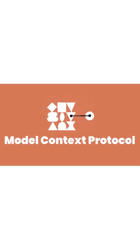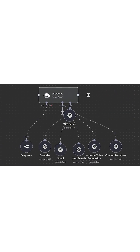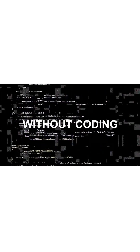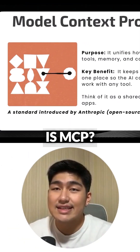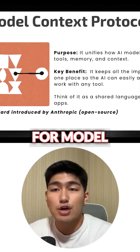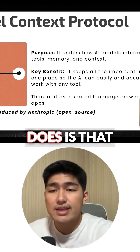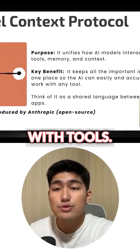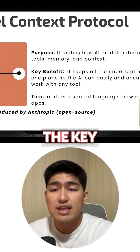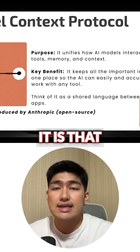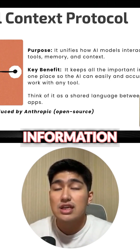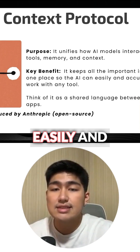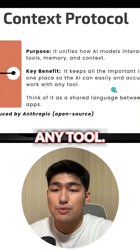MCP has been all the craze in the AI space today, and so today we're going to cover everything about MCP and how you can build MCP AI agents on any end without coding. So what exactly is MCP? MCP stands for Model Context Protocol. Basically what it does is that it unifies how AI models interact with tools, memories, and contacts. The key benefit of it is that it keeps all the important information in one place so that the AI can easily and accurately work with any tool.